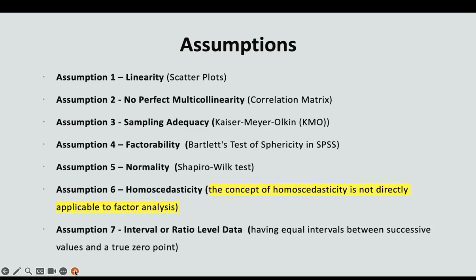Assumption 4: Factor ability. Factor ability refers to the extent to which observed variables in the data set are suitable for factor analysis — assessing whether the variables exhibit sufficient correlation with each other, indicating that they share common underlying factors. In other words, factor ability determines whether the data is appropriate for extracting meaningful latent variables through factor analysis. The test to assess this is the Bartlett's test of sphericity in SPSS, and if this test is below 0.05, that means factor ability has been met.